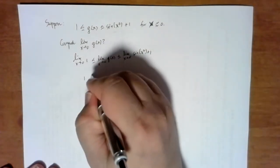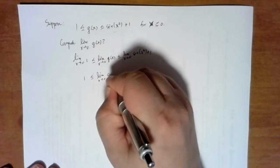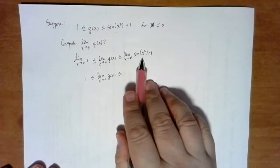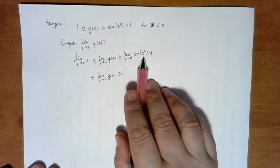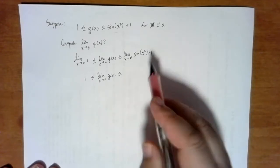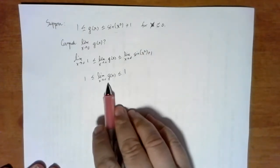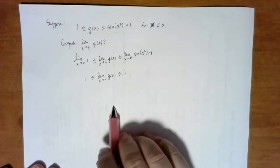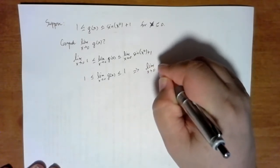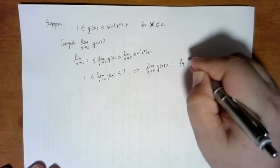So this limit we know is 1, and that's the limit as x approaches 0 of g of x. And then this limit, well, sine is a nice function, so you can just plug the 0 in. Sine of 0 is equal to 0, and so this limit then is just going to be 1. The limit as x approaches 0 of g of x is stuck between 1 and 1, therefore the limit is 1. And that's by the squeeze theorem.